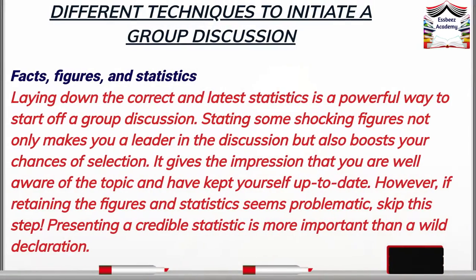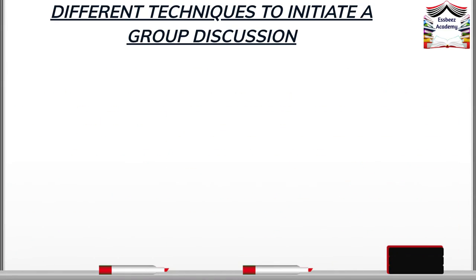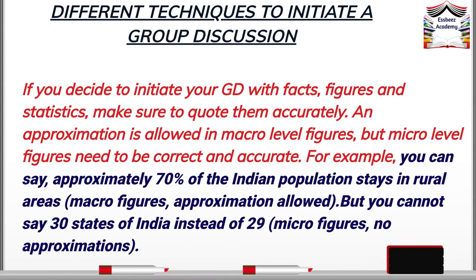Technique number five is facts, figures, and statistics. This is something I have already pointed out in one of my earlier lessons — it is not just sufficient that you are familiar with the concept, but you also need to be familiar with the facts and figures and statistics. Now, approximation is allowed at macro figure levels.